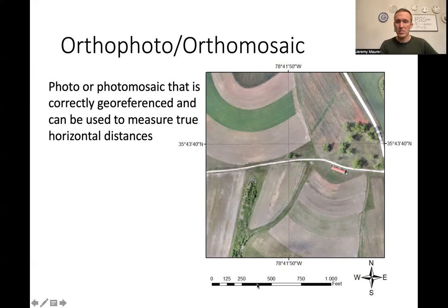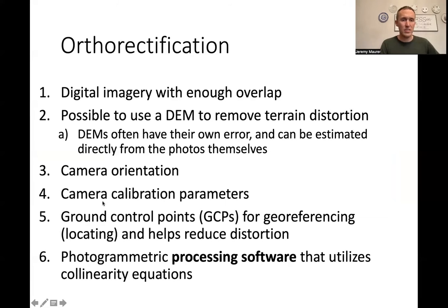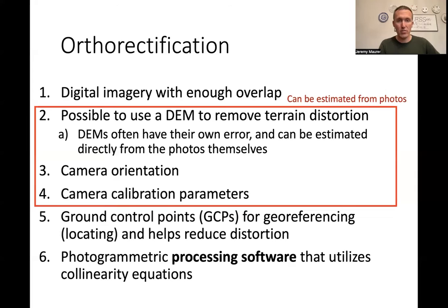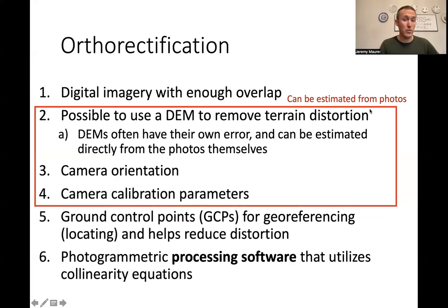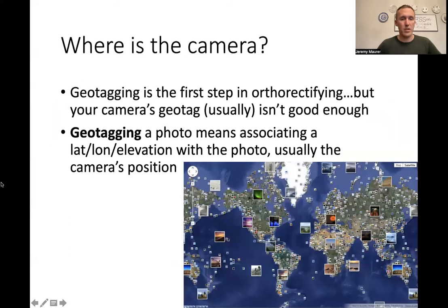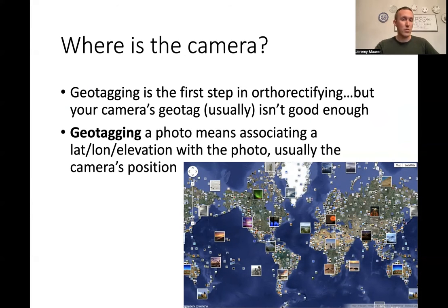There are a number of steps to the orthorectification process. Some steps can involve external data — for example, using a DEM (digital elevation model) to remove terrain distortions. You can also do this estimation from the photographs themselves, which is what we'll do in most cases with the software. One of the important steps in the orthorectification process is geotagging — identifying where your photographs were taken.